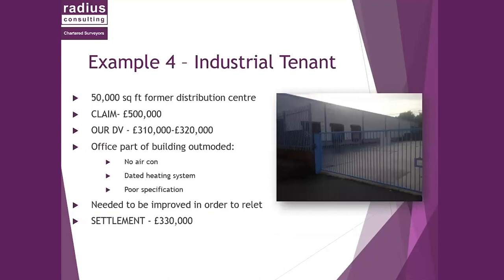The fourth case study was an industrial tenant — a large distribution centre of 50,000 square feet where the landlord's original claim was £500,000, again with costs agreed between building surveyors at that level. In this scenario the offices were outmoded: there was demand for the distribution centre due to its location, but from a modern occupier's perspective the offices had to be upgraded — new heating system, air conditioning installed, and improved WC specification. All of those had to be undertaken by the landlord, not the former tenant. The supersession argument came into play, assisting in a settlement of £330,000, pretty much in line with our diminution valuation.